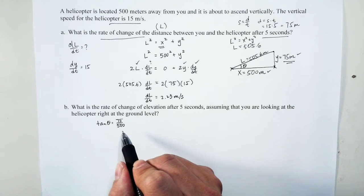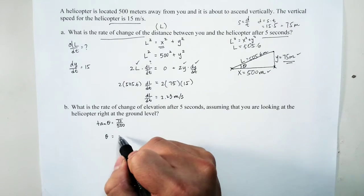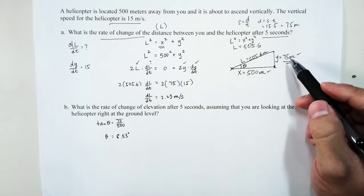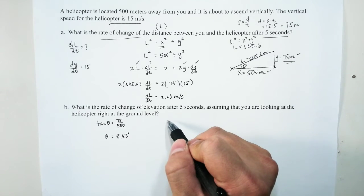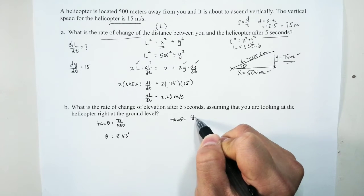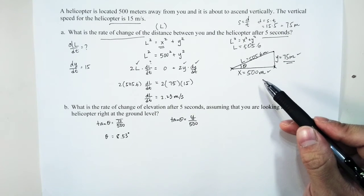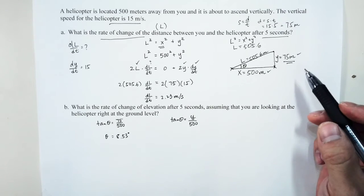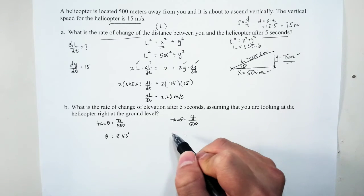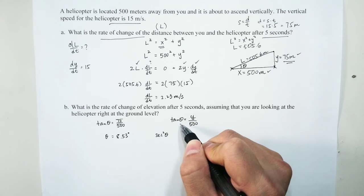We want to find what theta is. Using the inverse tangent, theta equals 8.53 degrees. Since the vertical distance is changing, when we set up the equation for differentiation we write tan(θ) = y/500 — we use 500 rather than x because the horizontal distance remains constant throughout the entire process.